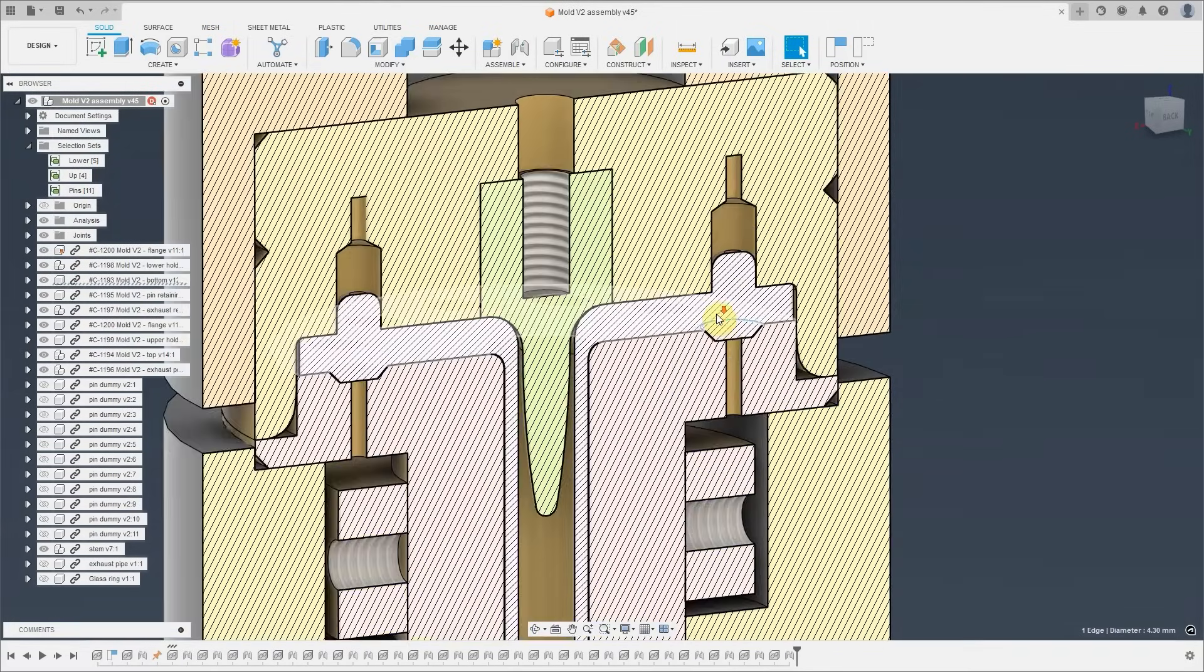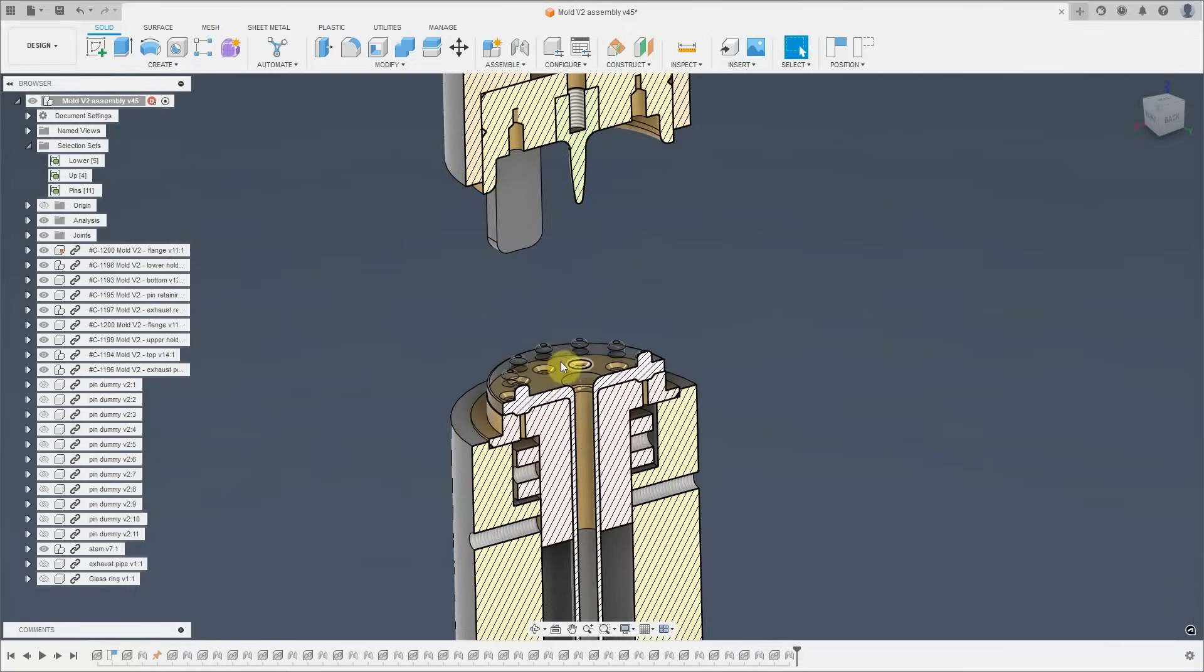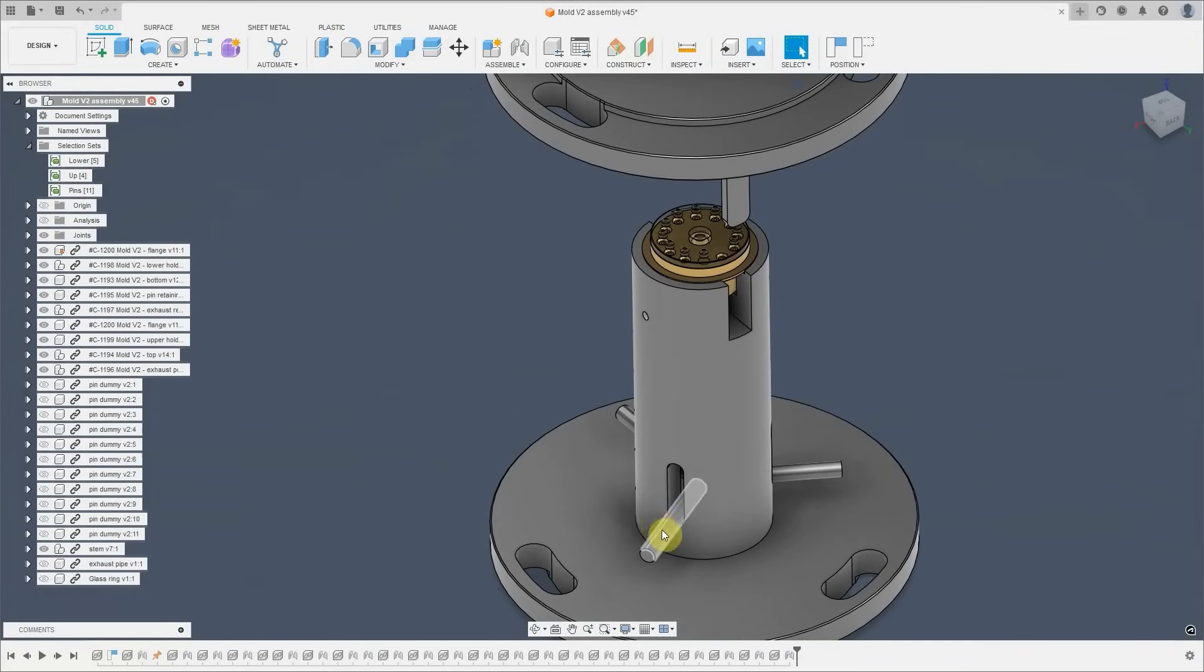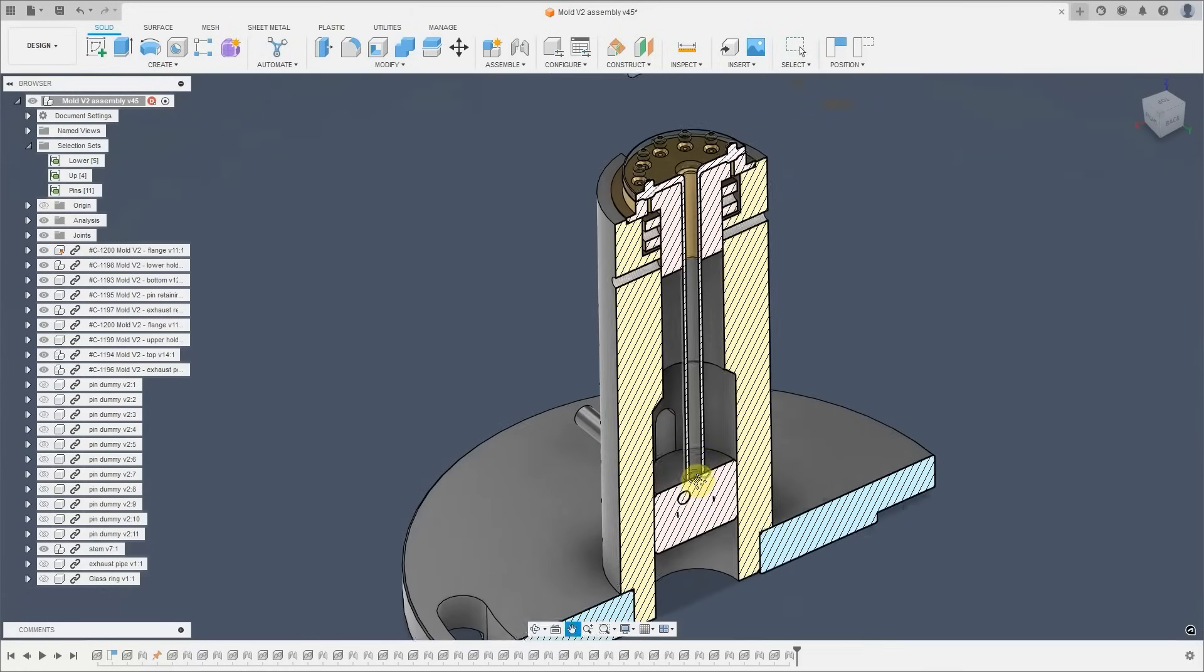Then the upper die is moved back, and we will have these three rods here that are connected internally to this metal cylinder. On this metal cylinder will sit the exhaust pipe, and we can lift it up and take the stem out for cooling.